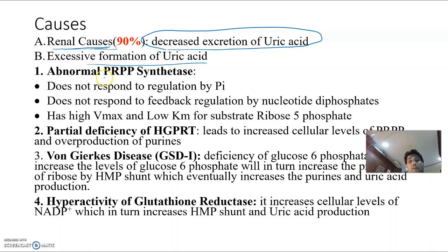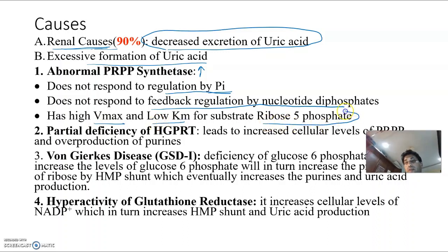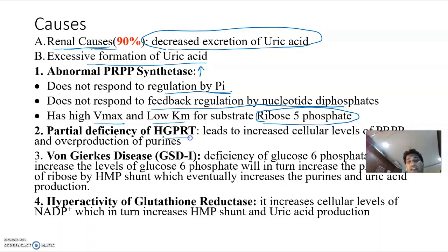Four causes of excessive uric acid formation: (1) Abnormal increase in activity of PRPP synthetase — a mutation makes it immune to feedback regulation by nucleotide triphosphates, develops very high Vmax and low Km for ribose-5-phosphate, leading to excessive conversion of ribose-5-phosphate to PRPP and thus excess purines and uric acid. (2) Partial deficiency of HGPRT → increased PRPP levels → increased purine production → increased uric acid → gout.